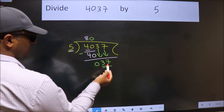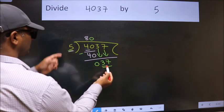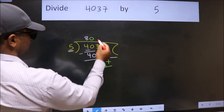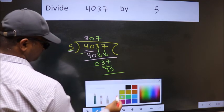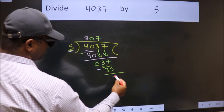So, 37. A number close to 37 in the 5 table is 5 sevens, 35. Now, we subtract. We get 2.